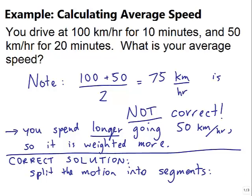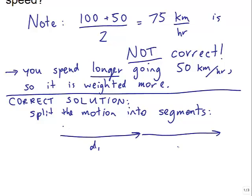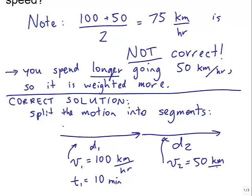D1 would be the distance you travel when you're going at 100 kilometers per hour for 10 minutes and D2 would be the distance you go going 50 kilometers an hour for 20 minutes.